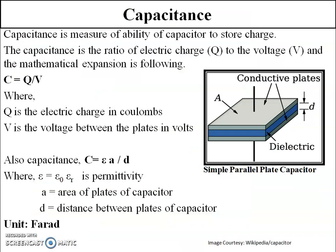Capacitance is the measure of the ability of a capacitor to store charge. If we have Q as charge in coulombs and V is the voltage between the plates, then C = Q/V is the equation of capacitance.